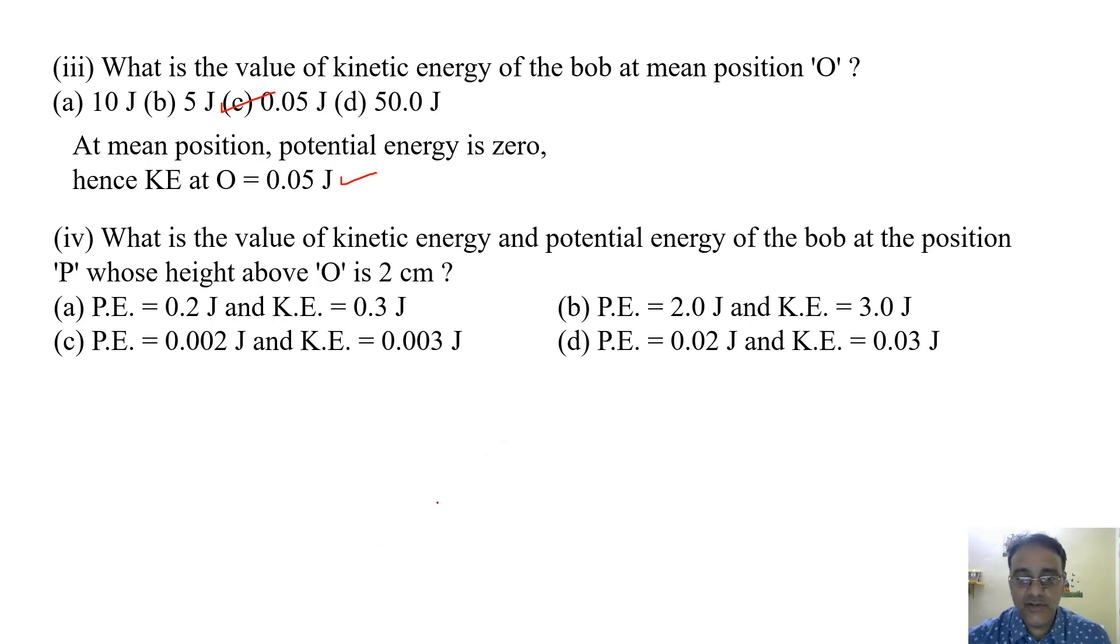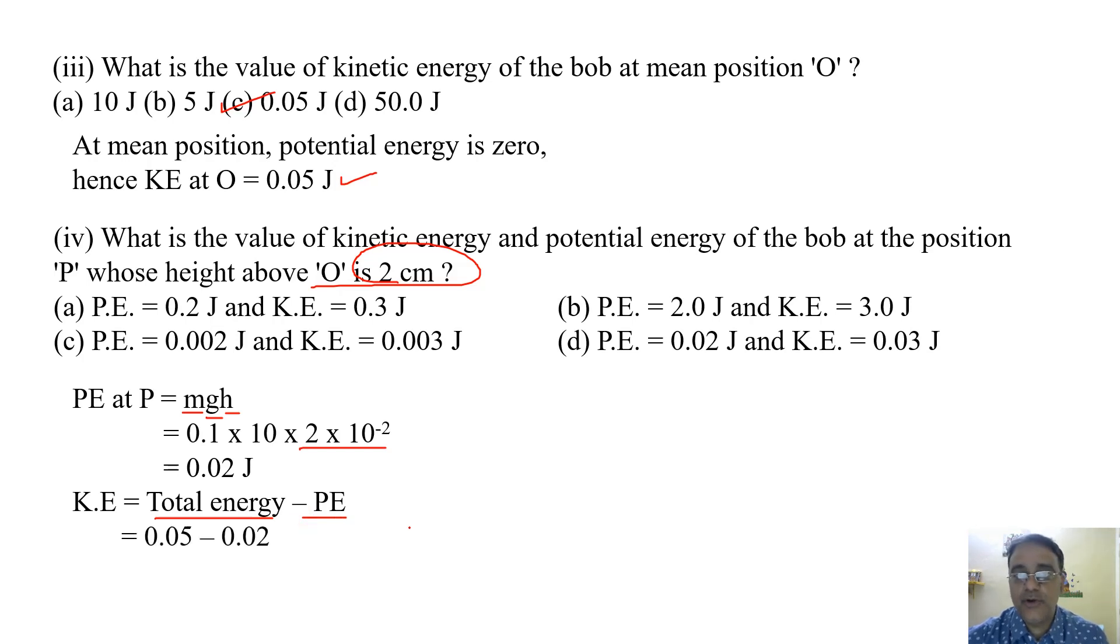Now the next question, what is the value of kinetic energy and potential energy of the bob at the position P whose height above O is 2 centimeter. So again, we will use the formula PE equals MGH. So M is given 0.1, 10 and this is 2. So we will get 0.02 J. So this is potential energy and the total energy we have 0.05. So from that we will get the kinetic energy. So total energy minus potential energy. So 0.05 minus 0.02. So we will get 0.03 Joules. So the correct option is option D.